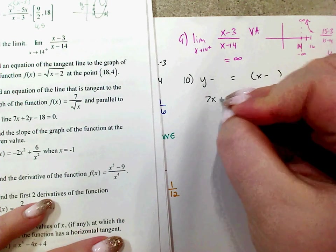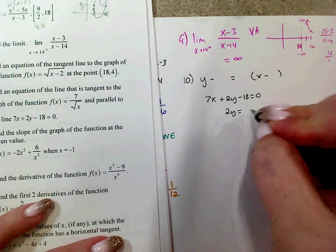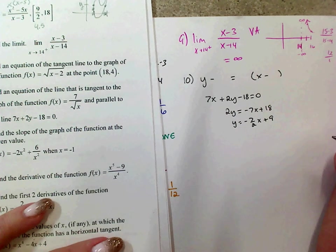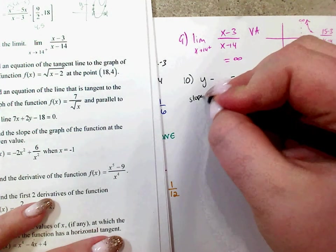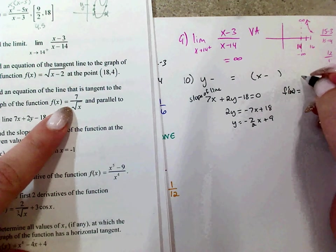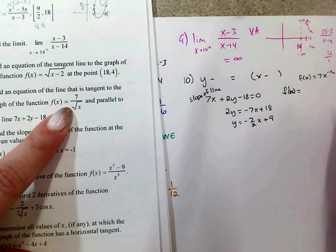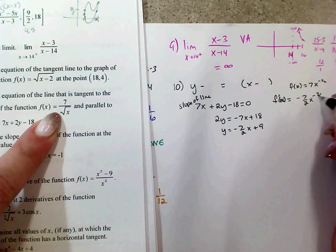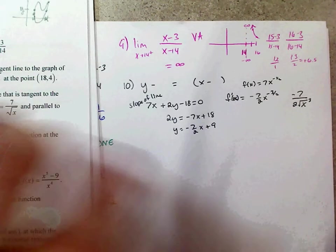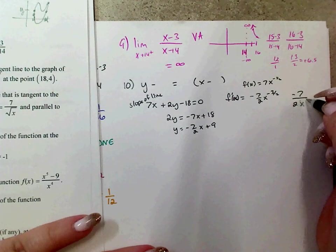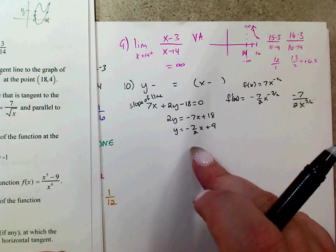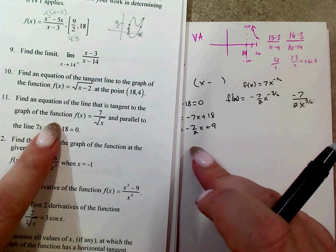Now find f prime. The function is f of x equals 7x to the negative 1/2, so the derivative is negative 7/2 times x to the negative 3/2, or negative 7 over 2 times the square root of x cubed. The question is: when does the derivative equal negative 7/2? Setting negative 7 over 2x to the 3/2 equal to negative 7/2, the 7s and 2s cancel, leaving 1 over x to the 3/2 equals 1.